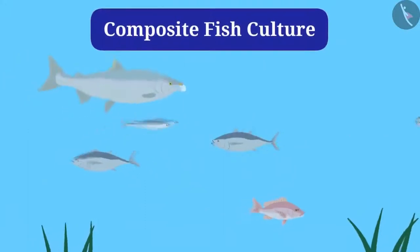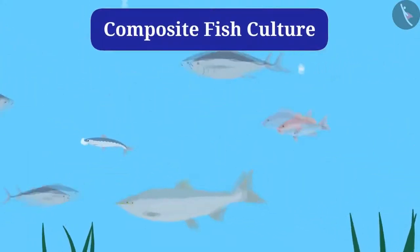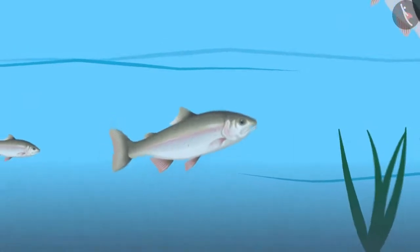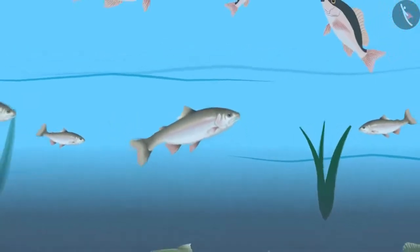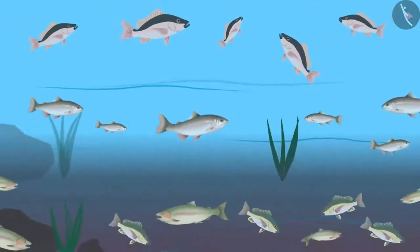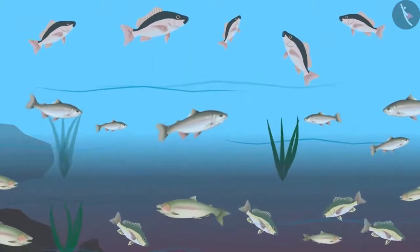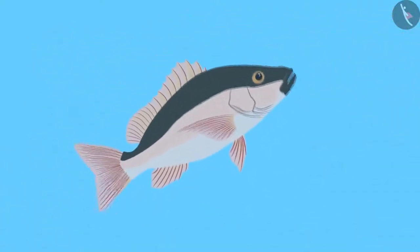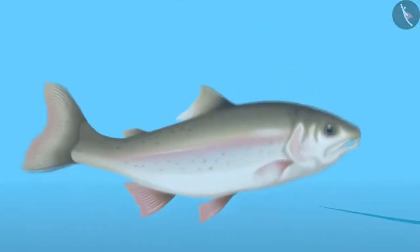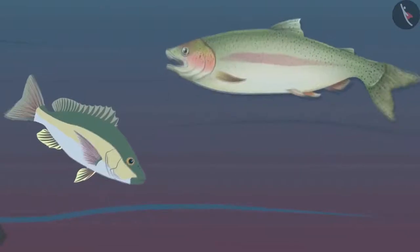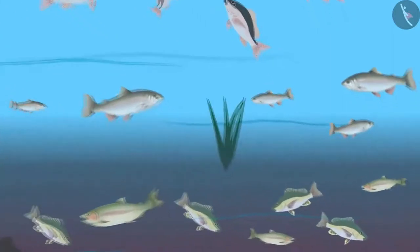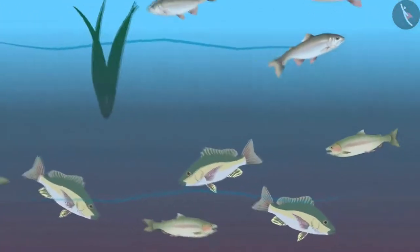A system called composite fish culture is used, in which five or six species of fish are kept in a single pond. Species are selected so that there is no competition for food among them, and food available in all parts of the pond is used. For example, catla takes its food from the surface of the pond, rohu from the central region, and mrigal and common carps take their food from the bottom. These species can simultaneously use all the food in the pond without competition, which increases the fish yield.